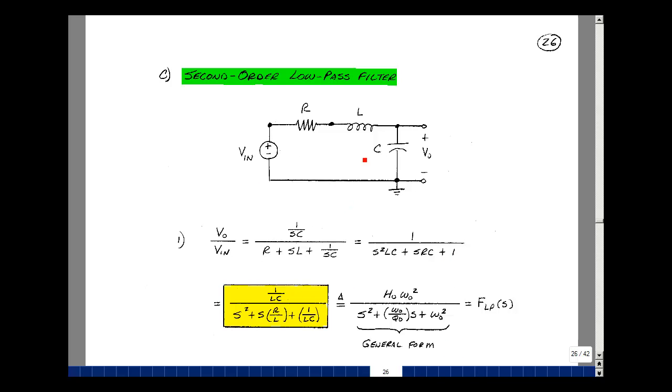For very low frequencies, as you go lower and lower, the impedance of the inductor is SL, so it gets smaller and smaller as S shrinks. In the limit, it becomes a short circuit. The capacitor's impedance is 1 over SC, so the frequency gets lower and lower. This becomes a number divided by 0, which is an open circuit.